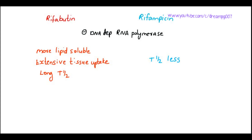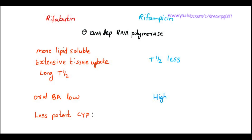But the bioavailability of rifabutin is very low, whereas in rifampicin the oral bioavailability is very high. One of the advantages of rifabutin is that it is a less potent CYP inducer. As a result, side effects and drug interactions are minimal.